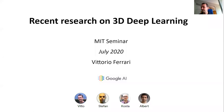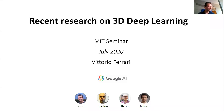Hello everyone and welcome to the MIT Vision Seminar. It's a pleasure today to have Vittorio Ferrari to talk about his recent work on 3D deep learning. Vittorio Ferrari is a senior staff research scientist at Google, where he leads a group on visual learning. He received his PhD at ETH Zurich in 2004, did a postdoc at INRIA and the University of Oxford. He received the ERC starting grant in 2012 and has over 120 publications, including a best paper award for his work on semantic segmentation propagation in ImageNet.